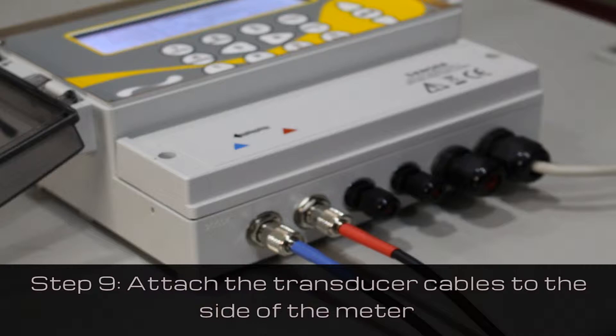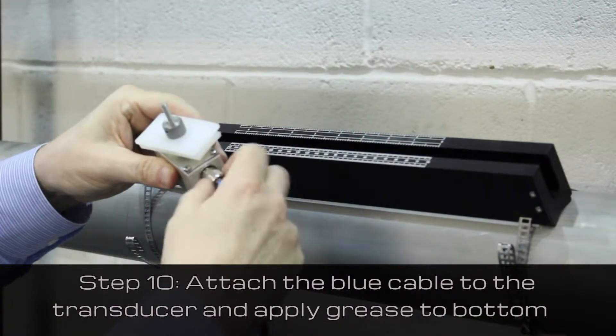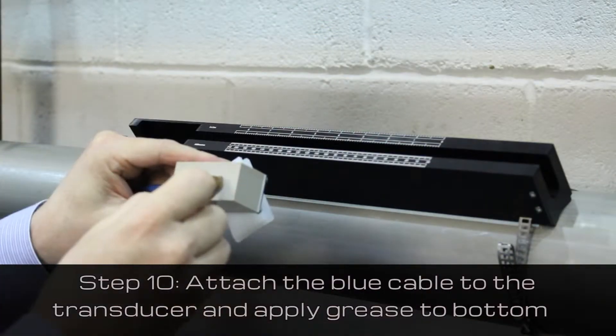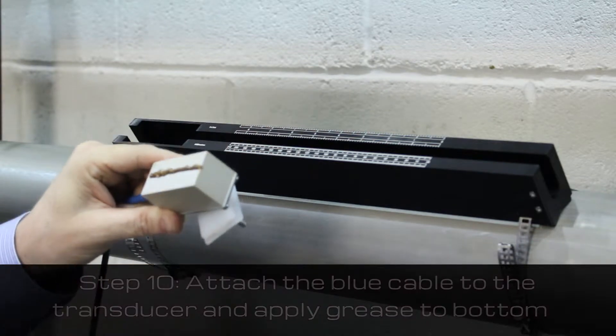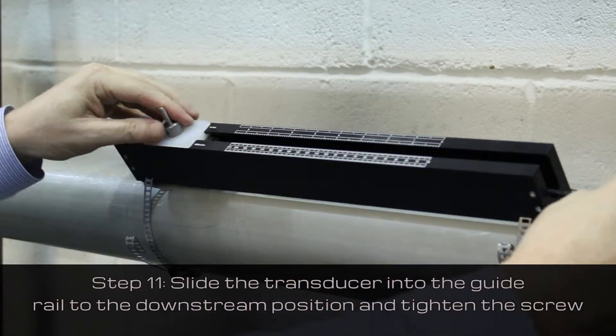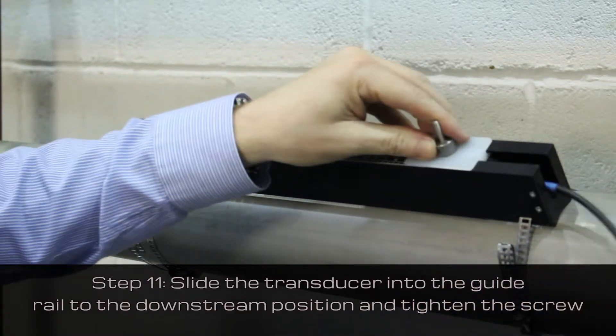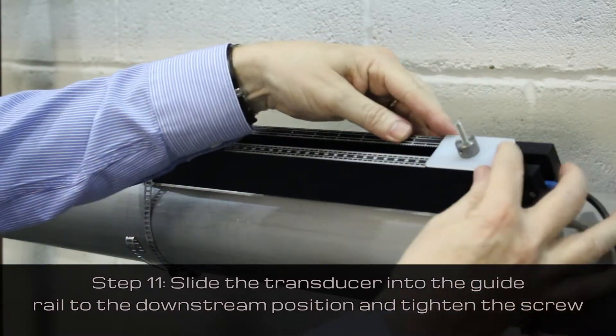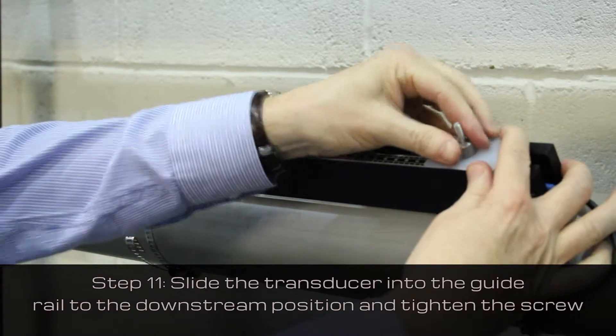Attach the transducer cables to the side of the meter. Attach the other end of the blue cable to the transducer, apply grease to the bottom and slide the transducer into the guide rail in the downstream position and tighten the screw.